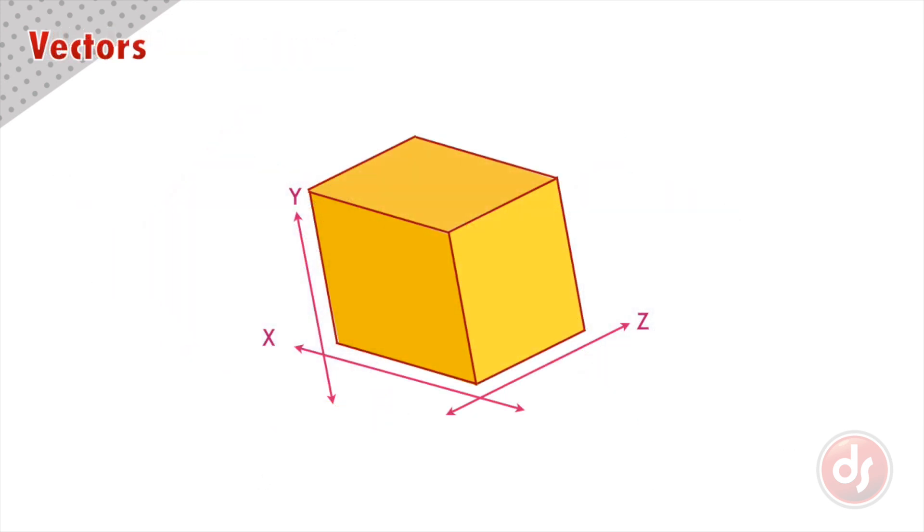However, not all lines go directly on X, Y, or Z. If I were to cut this box at an angle and separate the halves, I'd be left with a ramp. Notice how the sides of the ramp do not go in the same direction as X, Y, or Z.